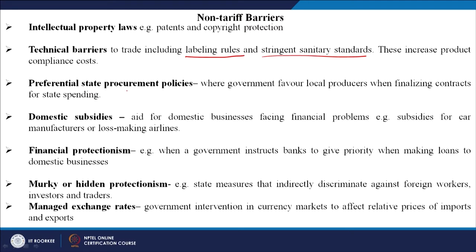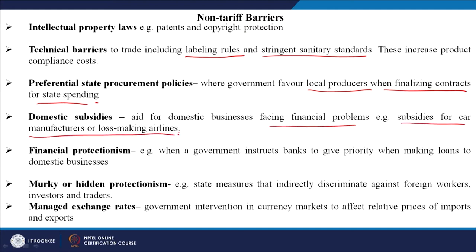Preferential state procurement policy is where the government favors local producers when finalizing contracts for state spending — this is a non-tariff protectionist measure. Domestic subsidies provide aid for domestic businesses facing financial problems, for example subsidies for car manufacturers or loss-making airlines. The Indian government has been doing this recently, trying to aid loss-making airlines like Air India so that they can still be competitive.